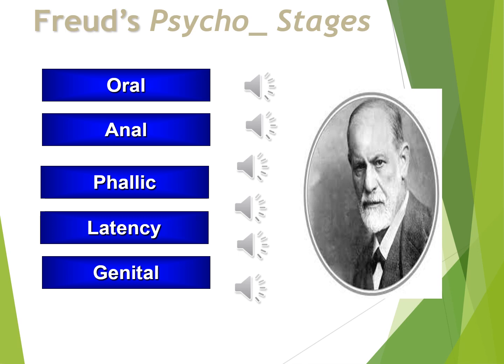The phallic stage covers ages 3 to 5 or 3 to 6. In the phallic stage, the little boy and little girl are thought to go through a complex — the Oedipus complex for boys and the Electra complex for girls. Following the phallic stage is the latency stage, where, unlike the other stages, there is no body area focus. The previous stage with the complexes was too intense, so sexuality becomes dormant during the early elementary school years as the child focuses on the many tasks to be learned.